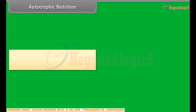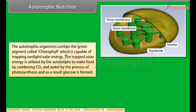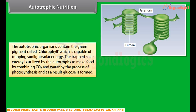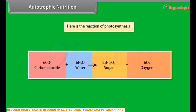Those organisms which can make their own food from carbon dioxide and water are called autotrophs. The autotrophic organisms contain the green pigment called chlorophyll, which is capable of trapping sunlight — solar energy. The trapped solar energy is utilized by autotrophs to make food by combining CO2 and water by the process of photosynthesis, and as a result glucose is formed.